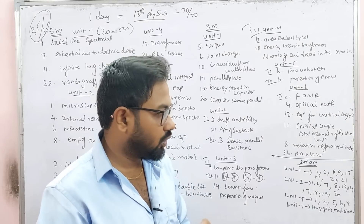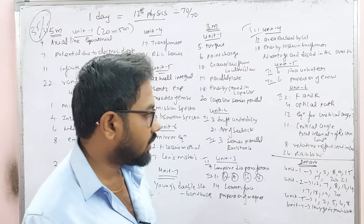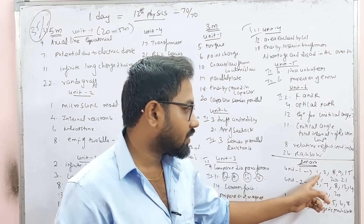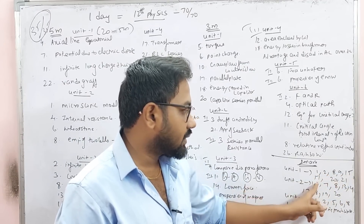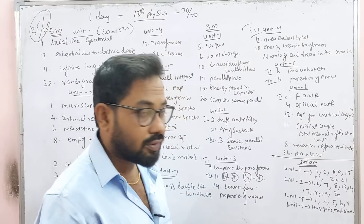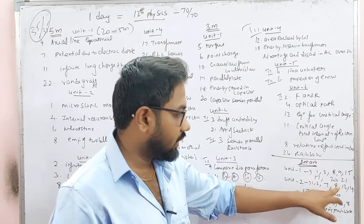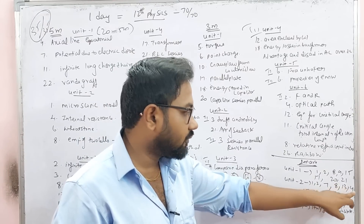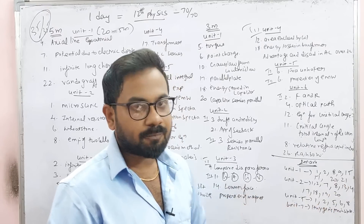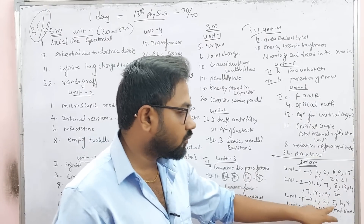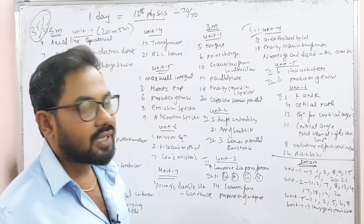Unit 1 book-back questions: 1, 2, 1, 8, 9, 15, 17, 21. Unit 2: 1, 2, 7, 8, 13, 14, 17, 18, 19, 20. Unit 5: 1, 2, 5, 6, 8. Unit 7 and Unit 8 questions listed.